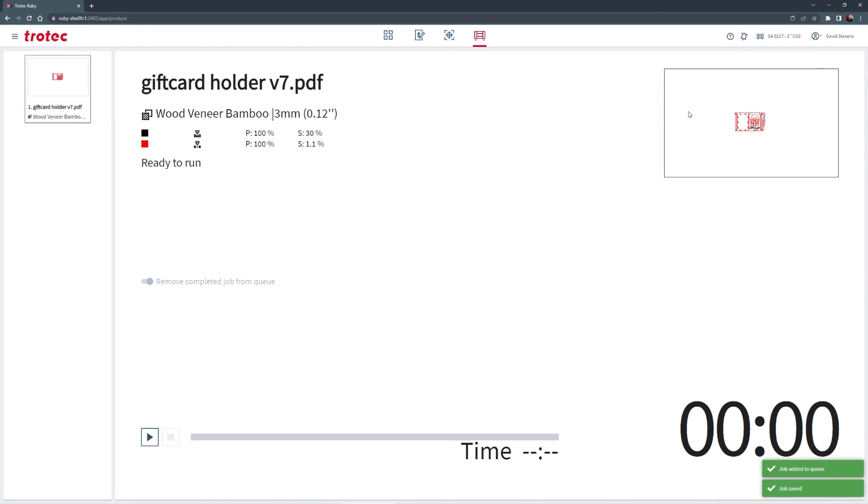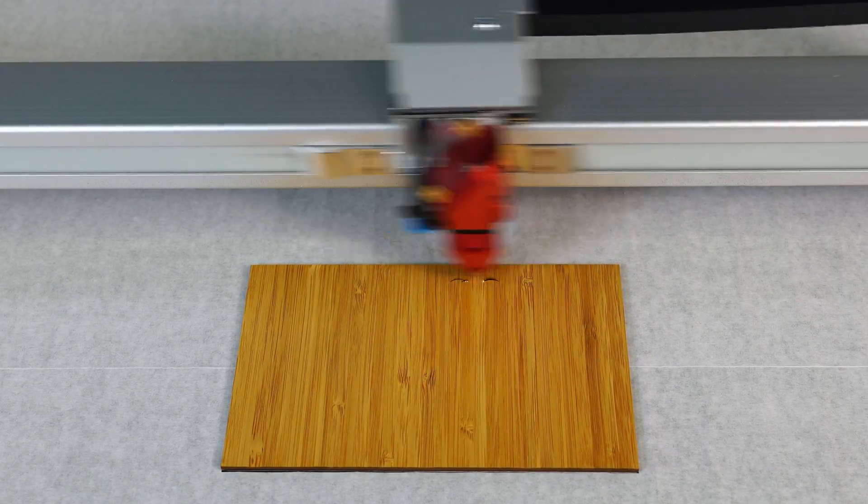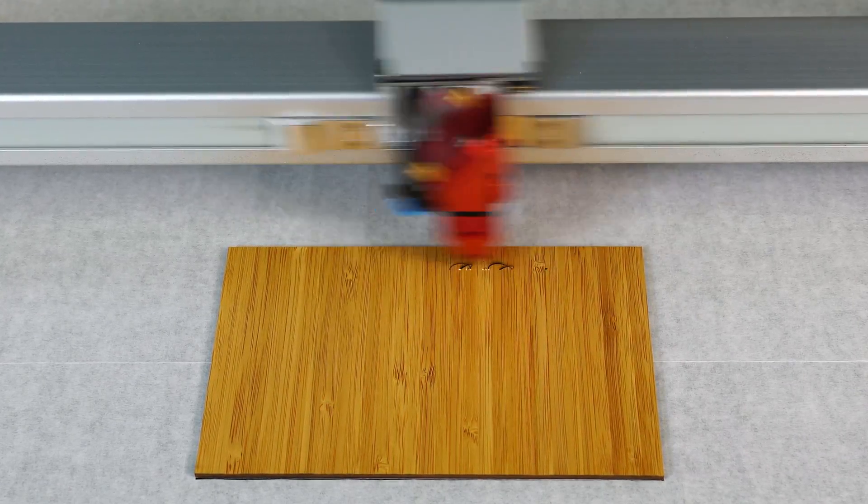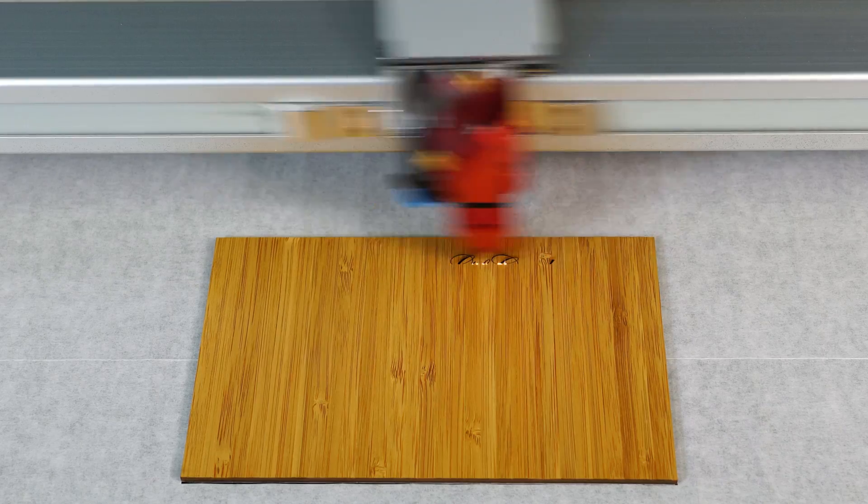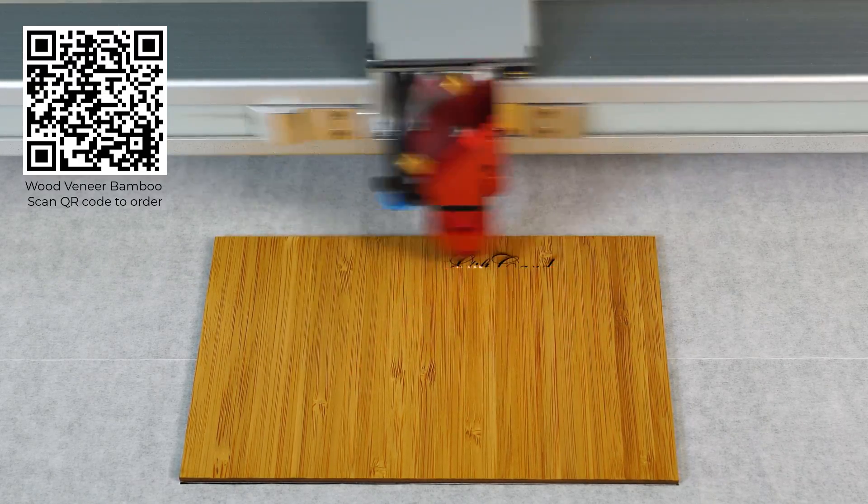Press start on the laser to activate the laser process. This video will transition into six different three millimeter materials running the same design. The laser will first engrave the bamboo veneer wood. Scan each QR code to order the materials shown.